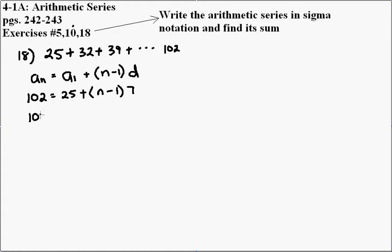Using distributive property, we will go 7 times n, which is 7n, and we will multiply negative 1 times 7, which is minus 7. We will now combine the like terms, 25 and negative 7. Now we have 102 is equal to 7n plus 18. Keep this in your back pocket. This is going to come in handy later on, this expression 7n plus 18.